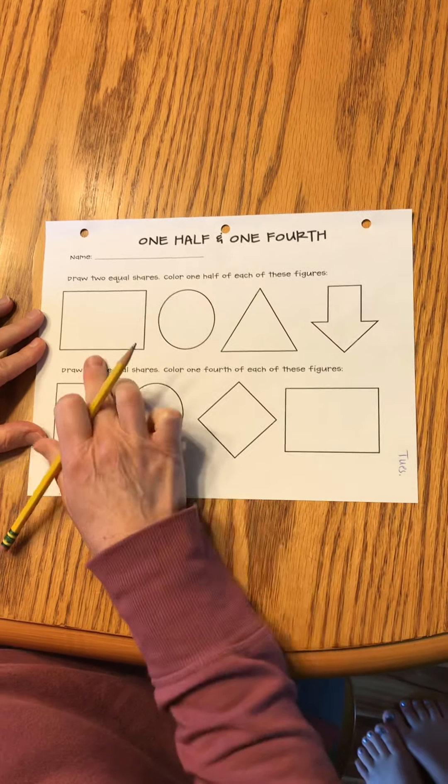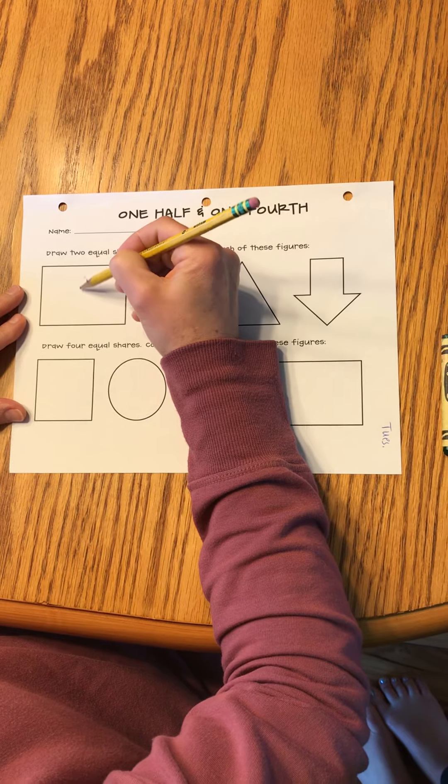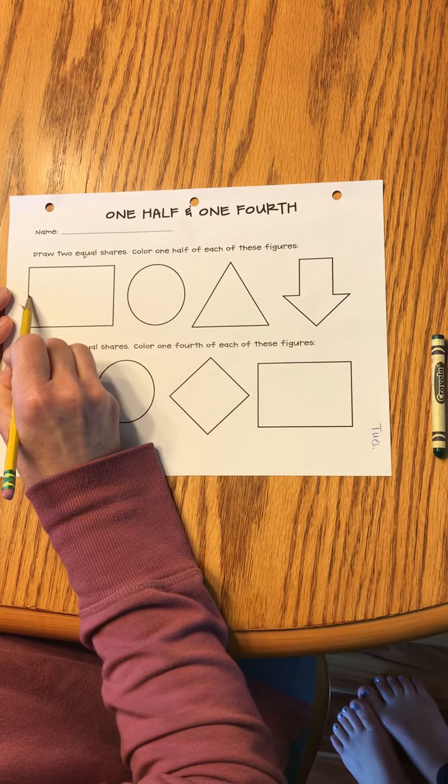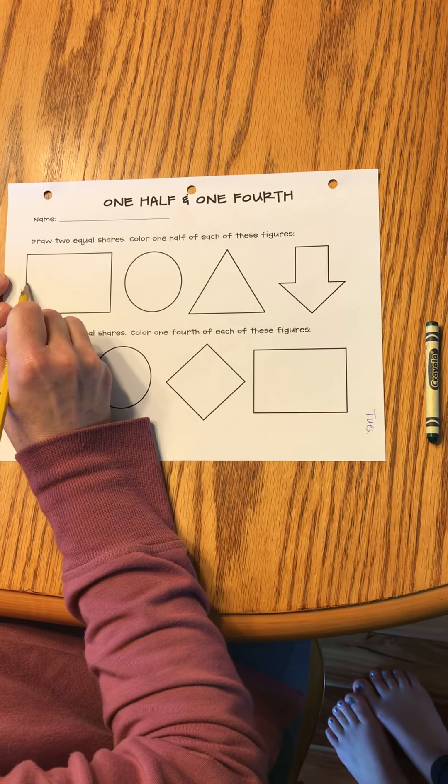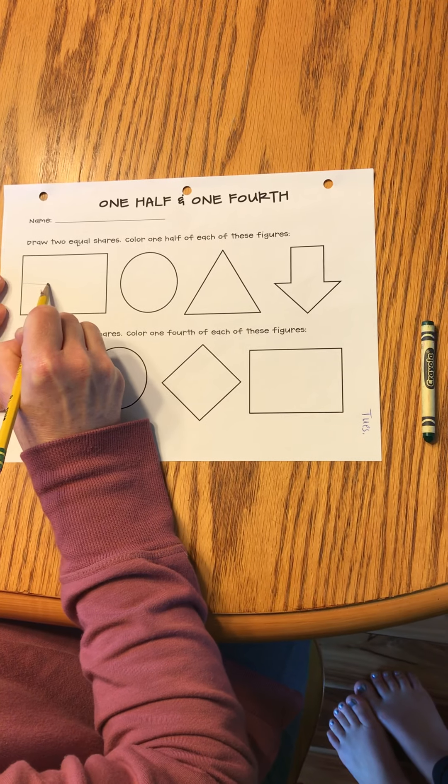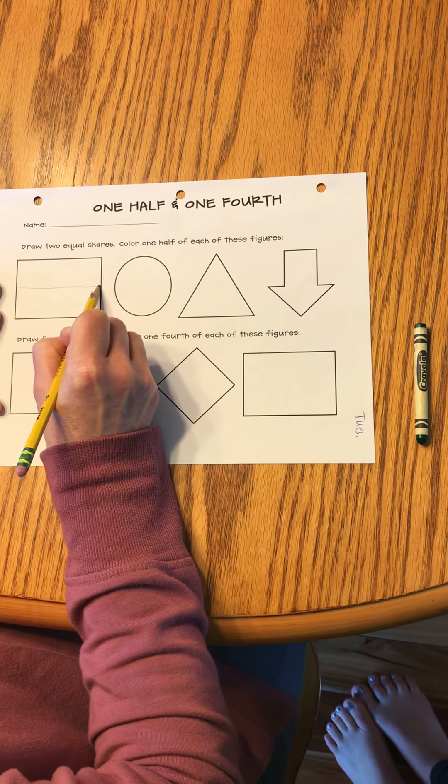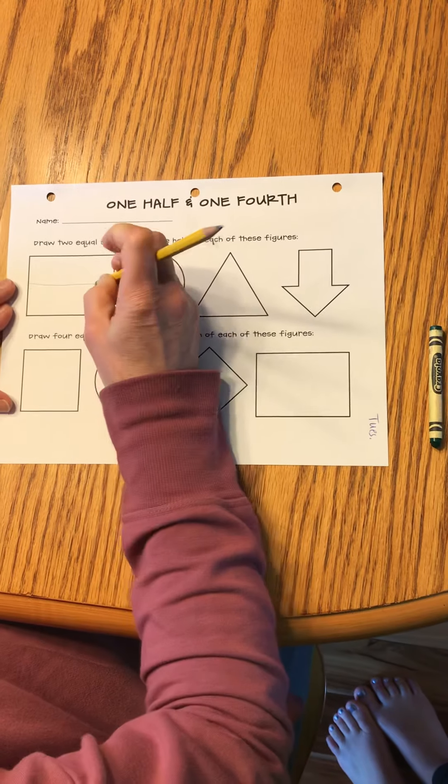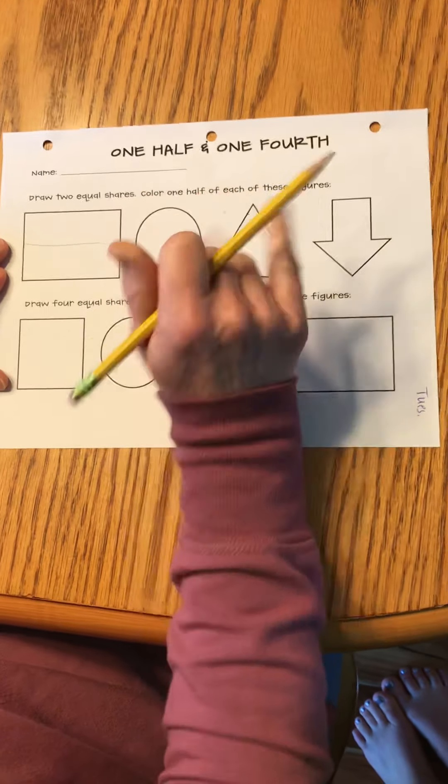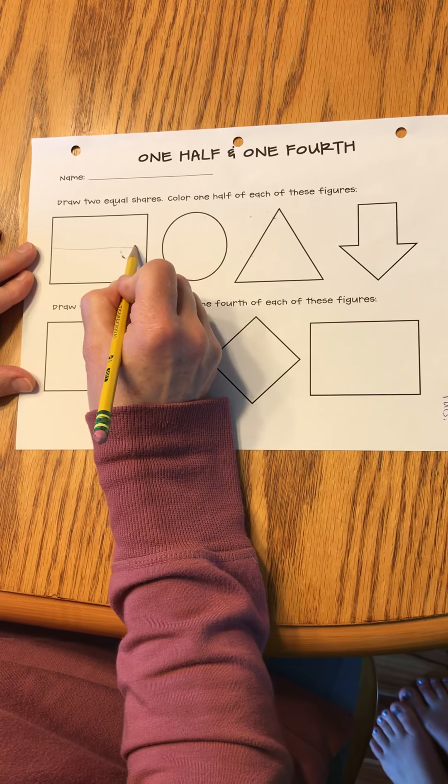You decide if you want to cut it in half vertically or if you want to cut it in half horizontally. I'm going to do horizontally today. I'm going to do my best to draw a straight line. It's not perfect. That's okay. If it gets a little more crooked than you want, you can just erase and straighten it out.